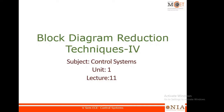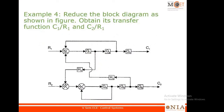Here is an example where there are two outputs — one at C1 and another at C2 — and two inputs R1 and R2. We are going to find the transfer function C1/R1 and another transfer function C2/R1.